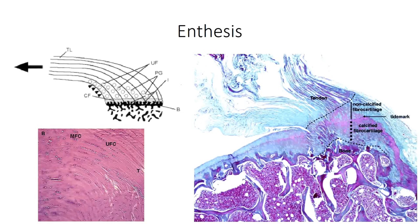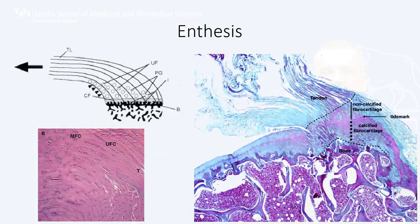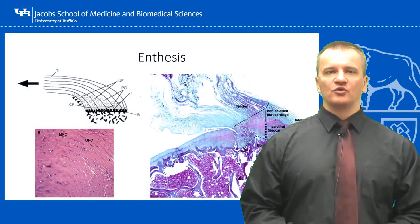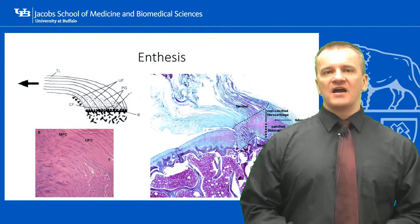The complexity of the fibrocartilaginous entheses has raised concerns regarding orthopedic repairs involving tissue grafts — specifically, how does a uniform tendon graft fare in replacing a ligament with fibrocartilaginous entheses? As it turns out, the tendon graft will develop a fibrocartilaginous transition zone over time, suggesting that the mechanical stresses placed on the graft dictate the function. It's also important to note that fibrocartilaginous entheses are susceptible to rheumatic diseases, whereas fibrous entheses are hardly ever involved in these conditions.